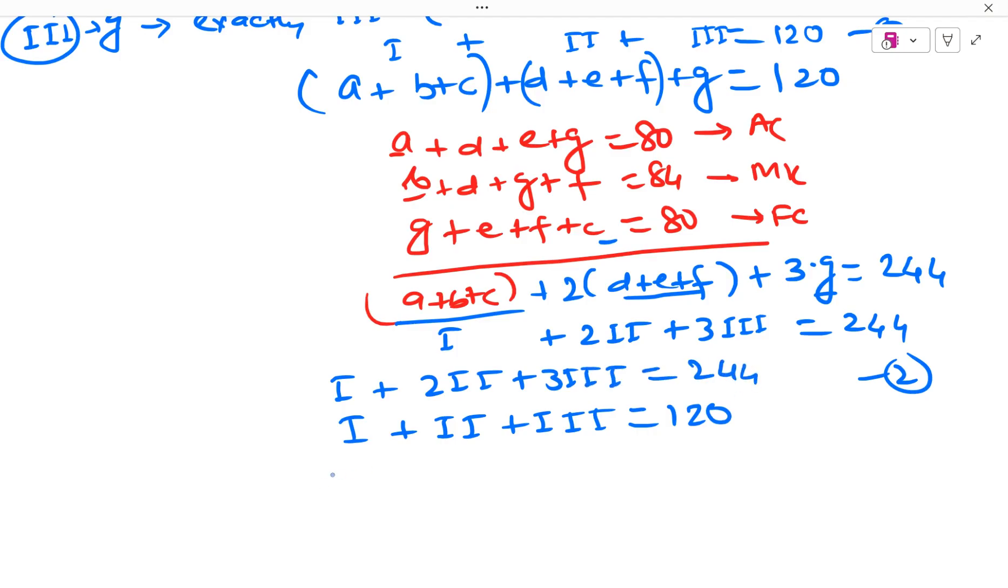Let me rewrite these equations. So my first equation is 1 plus 2 plus 3 is equal to 120. And my second equation is 1 plus 2 of 2 plus 3 of 3 is equal to 244. Just subtracting this equation from the larger value one which gives me 2 plus 2 of 3 is equal to 124.